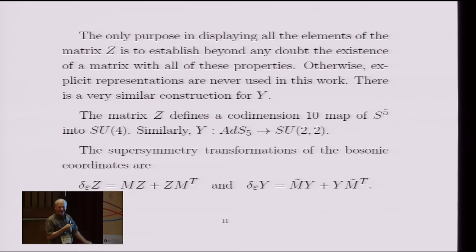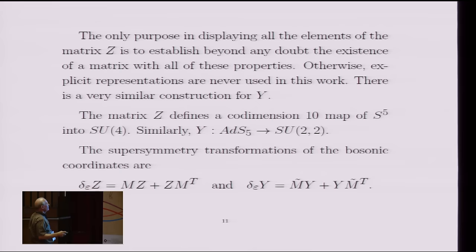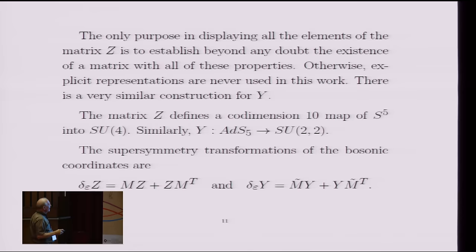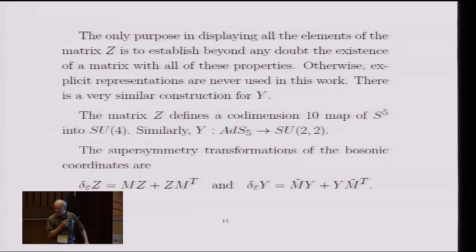So the only purpose in writing out that matrix explicitly was to demonstrate beyond a doubt that it exists with all these properties. I will never need to use the explicit formula. Everything is done more abstractly. But you don't want to do abstract manipulations with something that doesn't exist. So that's why I went to that trouble. So this matrix Z, as I said, is a co-dimension 10 map from S5 into SU(4). And similarly, I define a matrix Y, which maps AdS5 into SU(2,2).